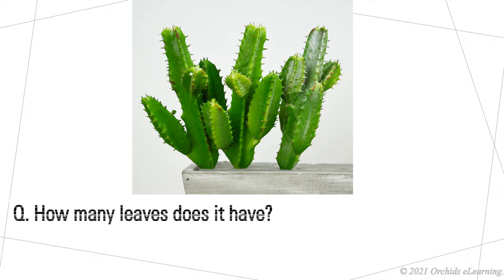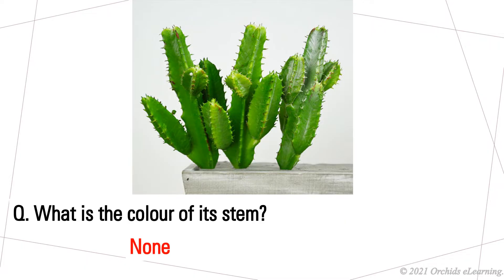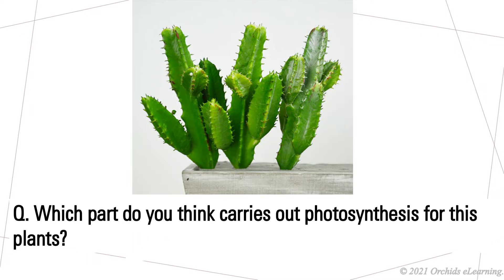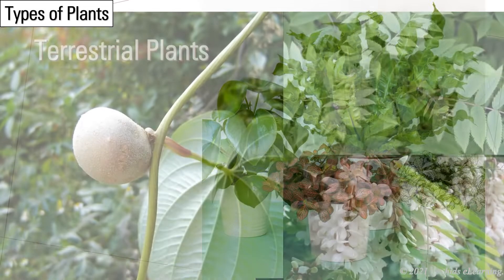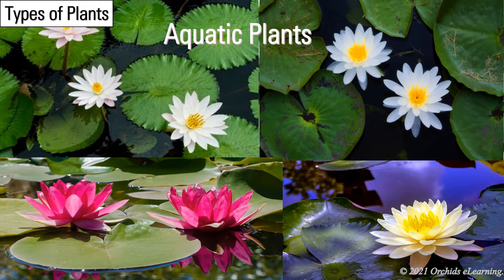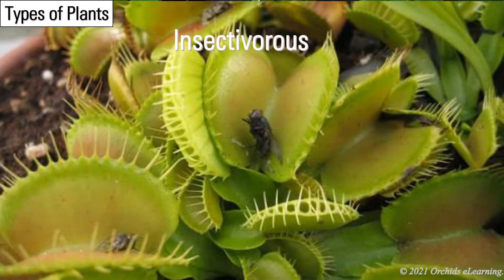Look at the cactus plant and answer the questions: how many leaves does it have? None. What is the color of its stem? Green. Which part do you think carries out photosynthesis for these plants? Types of plants: there are different types of plants such as terrestrial, aquatic, insectivorous, and non-green plants.